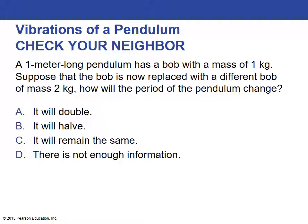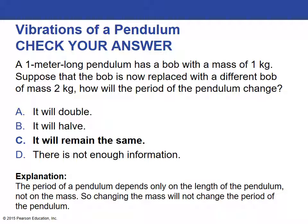Review question: A one-meter pendulum has a bob of mass one kilogram. If the bob is replaced with a two-kilogram bob, how will the period change? The answer: the period will remain the same. The period of a pendulum depends only on the length, not on the mass. So changing the mass won't change the period.